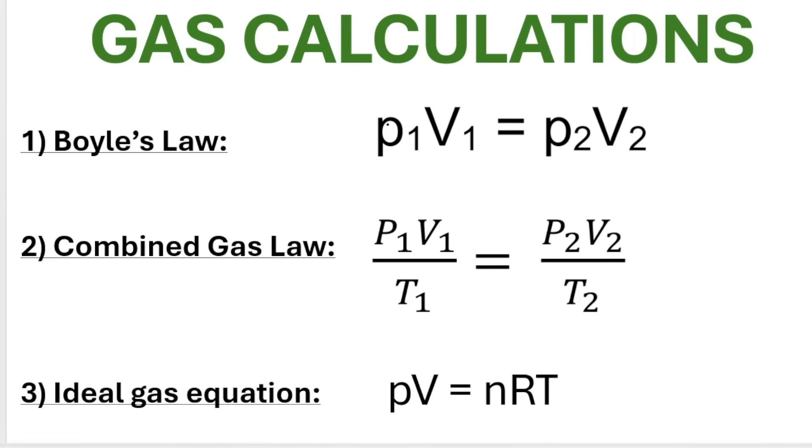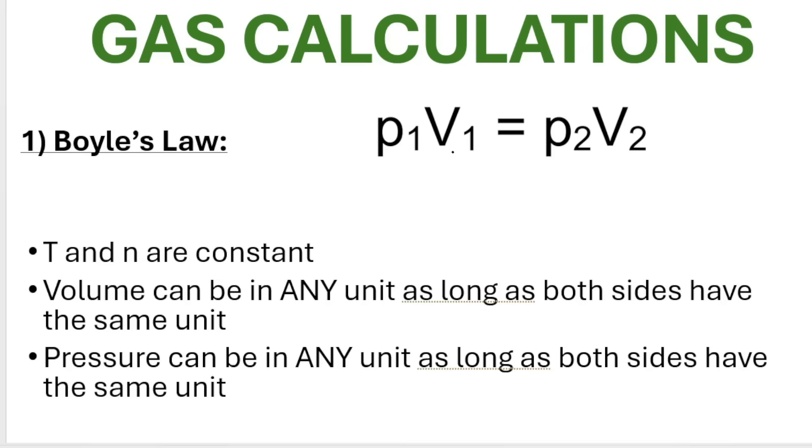As a recap, this first formula represents Boyle's law: pressure times volume equals pressure times volume. They are inversely proportional provided that temperature and number of moles of gas remains constant. Remember volume can be in any unit as long as both sides have the same unit. Pressure can also be in any unit as long as both pressures have the same unit.